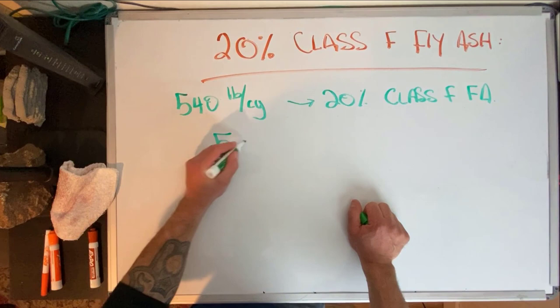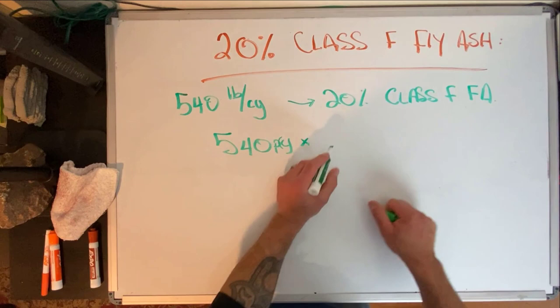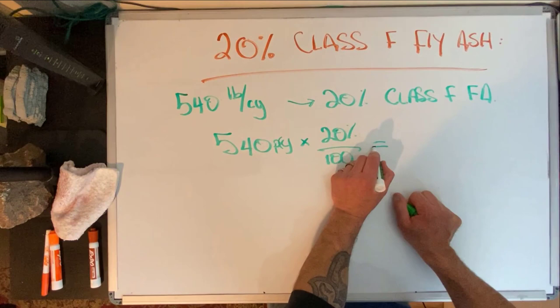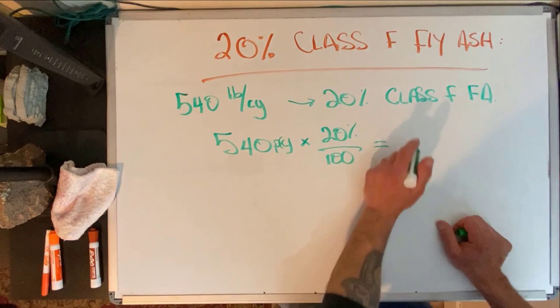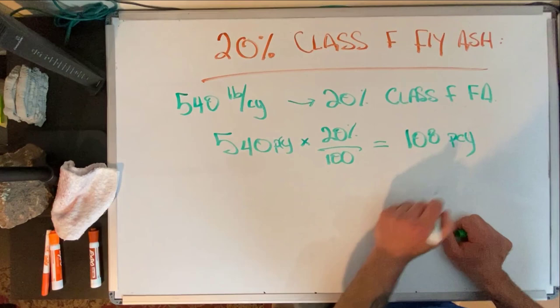take our 540 pounds per cubic yard times 20% divided by 100. That equals... 540 times 0.2 is 108 pounds per cubic yard, and this is